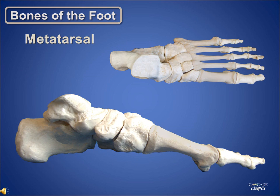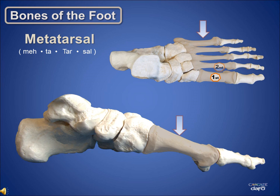The five bones in the middle of the foot are called the metatarsal bones. The metatarsal bones are numbered 1 through 5, starting from the medial side. We refer to them as the first metatarsal bone, the second metatarsal bone, the third metatarsal bone, and so forth.